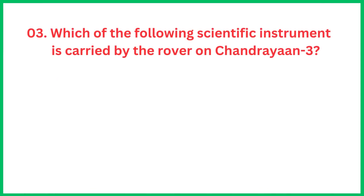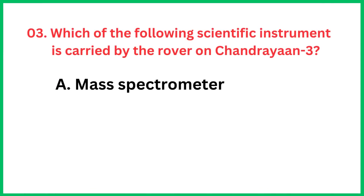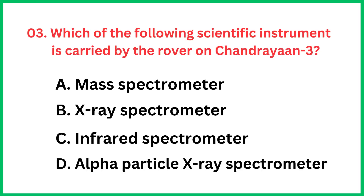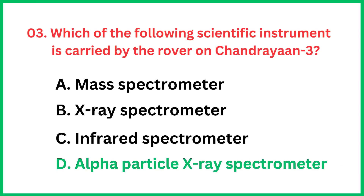Which of the following scientific instruments is carried by the rover on Chandrayaan-3? The correct answer is option D, Alpha Particle X-ray Spectrometer.